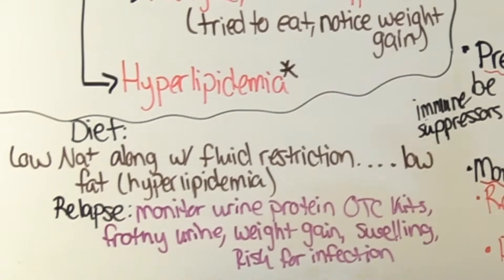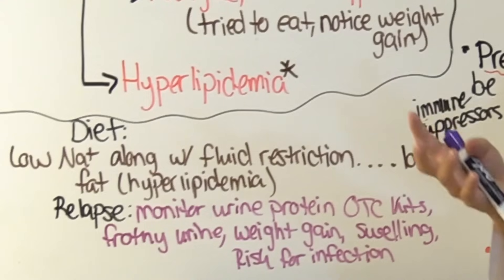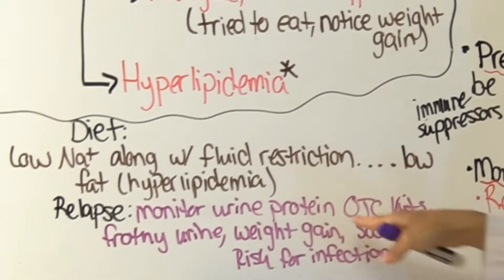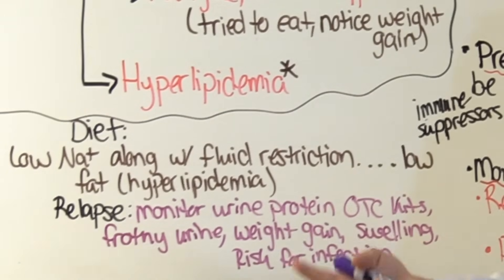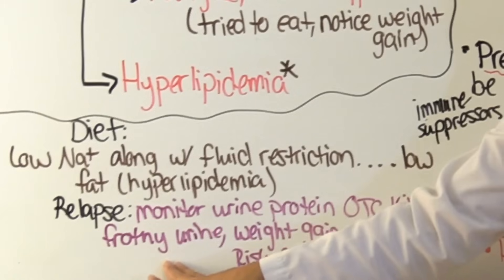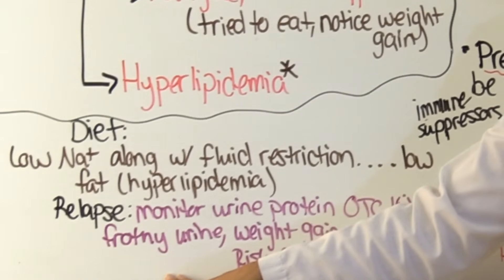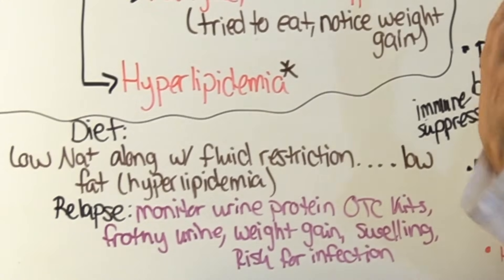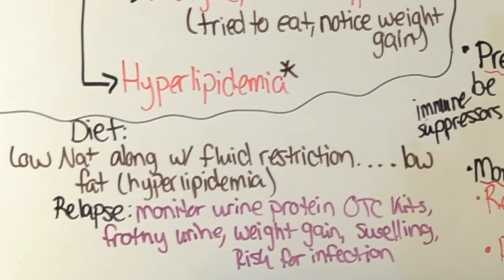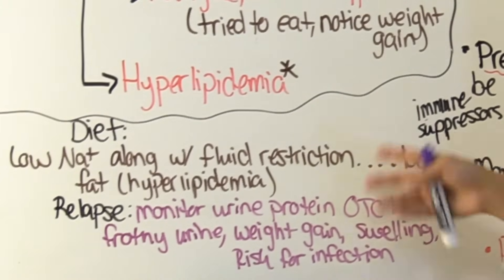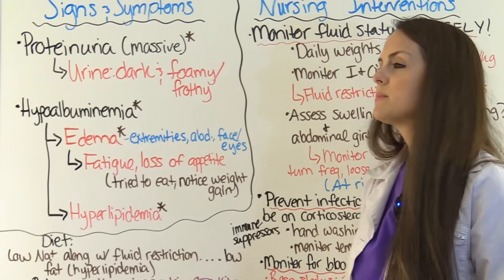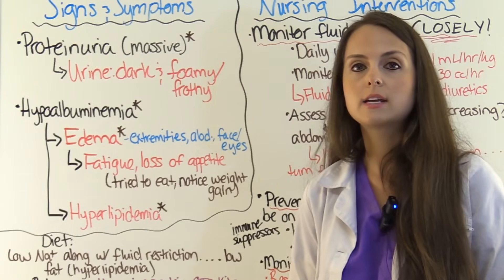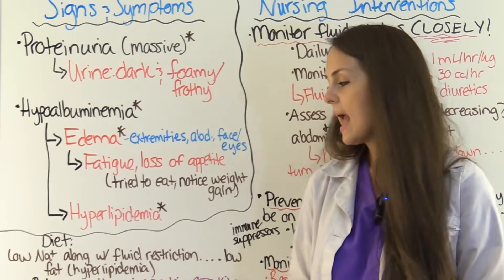Regarding relapse: these patients can go into remission but can also relapse, so educate the patient — especially parents of pediatric patients — on signs of relapse. They can use over-the-counter kits to monitor for protein in the urine. They should also observe the urine: is it frothy? That signals protein. Are they noticing unexpected weight gain? Weigh the child daily as part of the morning routine, look for swelling, and monitor infection risk especially if the patient is taking corticosteroids or immune suppressors — they need to avoid sick contacts and wash their hands.